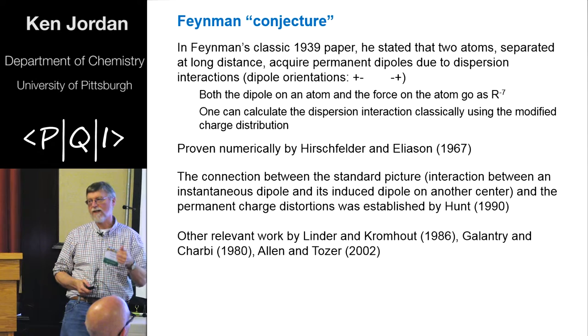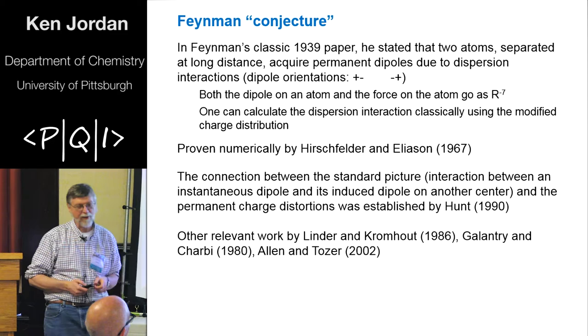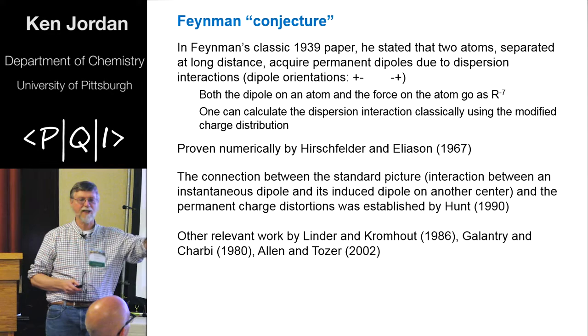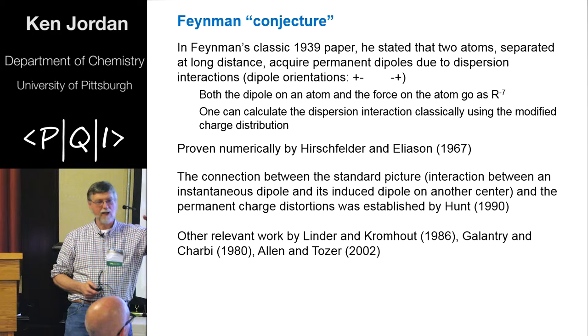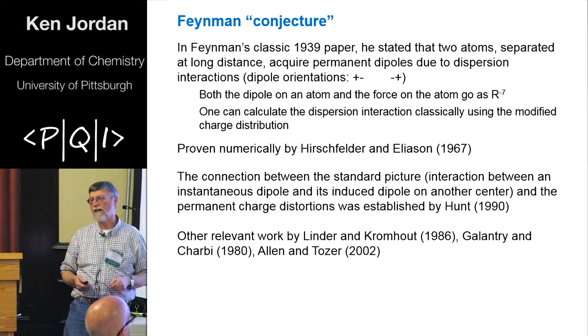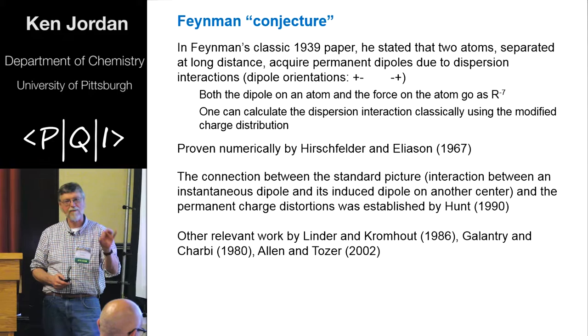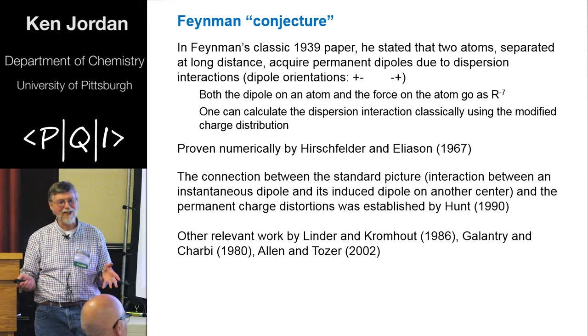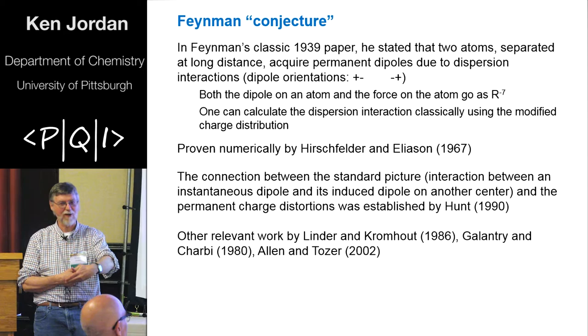One is he points out that if you had two atoms at long distance, due to the dispersion interaction, each atom would get a permanent dipole and the negative ends of the dipoles would be pointing towards one another. So if you think about the traditional explanation of dispersion, we have a fluctuating, fluctuation generating a dipole and instantaneously it generates another dipole, there would be no permanent dipoles coming from that because you could generate the dipole pointing in either direction. In addition, what Feynman said is if you knew the change in the charge distribution, you can classically calculate your dispersion energy. There's not a single line of proof here. This is based on his undergraduate thesis.